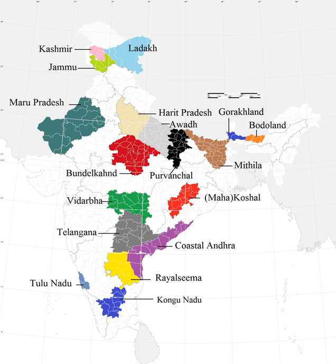Delhi, Meerut, Bagpat, Muzaffarnagar, Gurgaon, Sonnapat, Faridabad, Ghaziabad, Noida, and Greater Noida form the National Capital Region, with a population of about 22 million. The political administration of Delhi more closely resembles that of a state than a union territory, with its own legislature, high court, and an executive council of ministers headed by a Chief Minister. New Delhi is jointly administered by the union government and the local government of Delhi. The previous National Democratic Alliance government introduced a bill in parliament in 2003 to grant full statehood to Delhi, but the legislation was not passed.